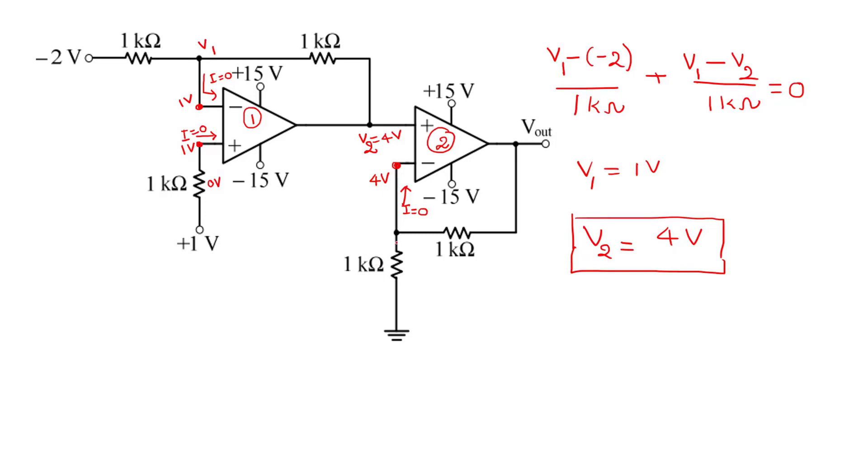Input terminal op-amp draws no current. Apply KCL at this node. I will assume this node voltage is V3. So, (V3 - 0 volts)/1 kilo ohm + (V3 - Vout)/1 kilo ohm equals 0.